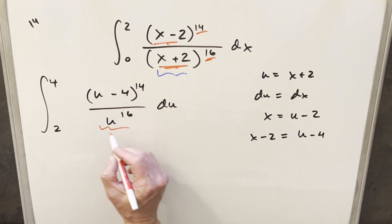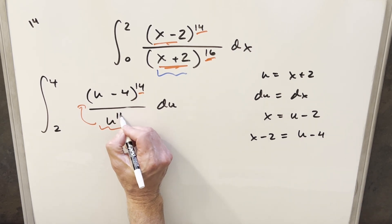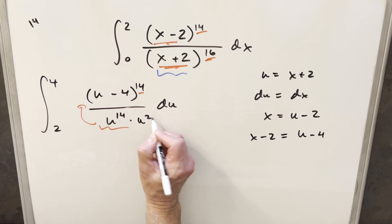Now from here, what I'd like to do is let's just divide this right into the numerator. The problem is we have different exponents here. Well, what I can do to fix that, let's just break that up. So for u to the 16th here, I'm going to rewrite that as u to the 14th times u squared, so now I can divide that into here.